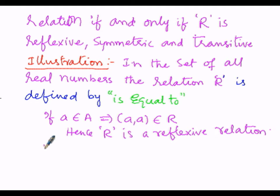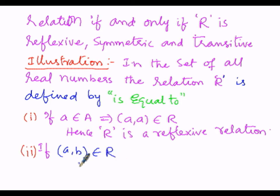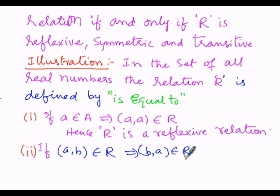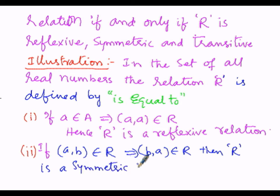In the second case, for symmetry: if (A, B) belongs to R, then (B, A) must also belong to R. Since the property is 'equals to', if A equals B then B equals A. Therefore (B, A) also belongs to R, and R is a symmetric relation.